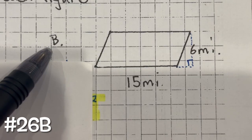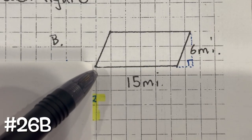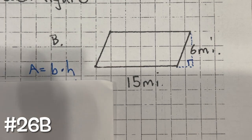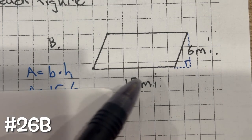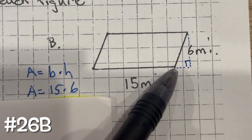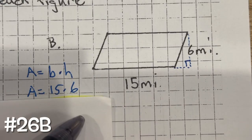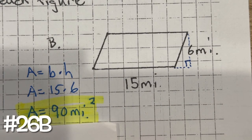Problem 26b: we find the area of a parallelogram. The formula for the area of a parallelogram is base times height. The base is 15 and the height is 6. So 15 times 6 gives us 90 square miles.